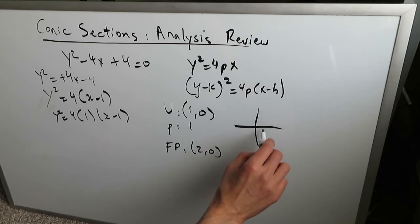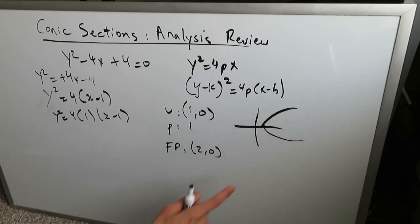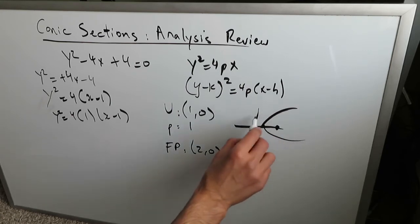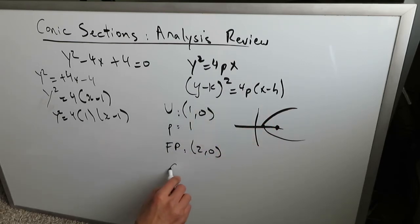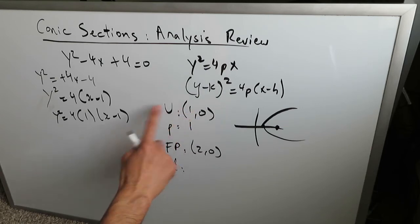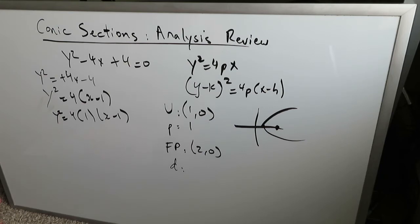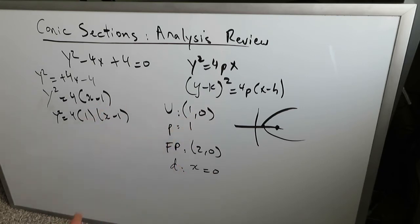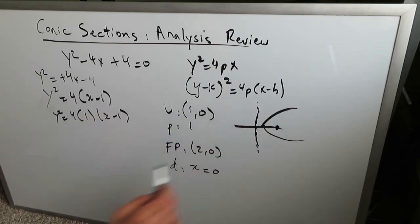The directrix is on the other side. If the vertex is at (1, 0) and you have a right-facing parabola, the focal point is to the right. The directrix is exactly one unit to the left of the vertex's x-coordinate. Your directrix is x = 0 because 1 − 1 = 0. So your y-axis is your directrix.